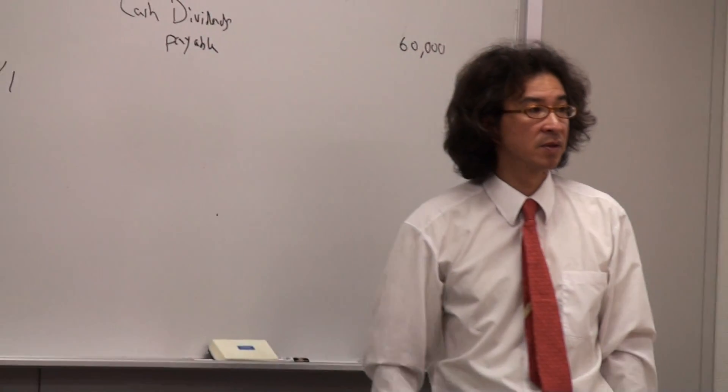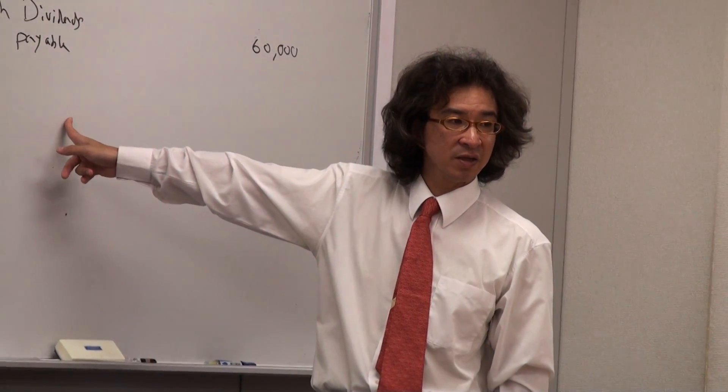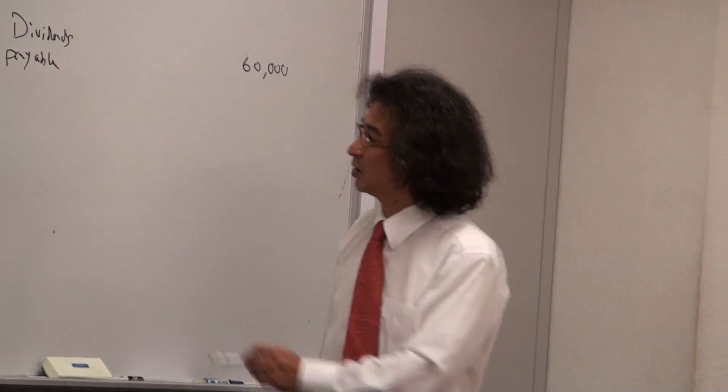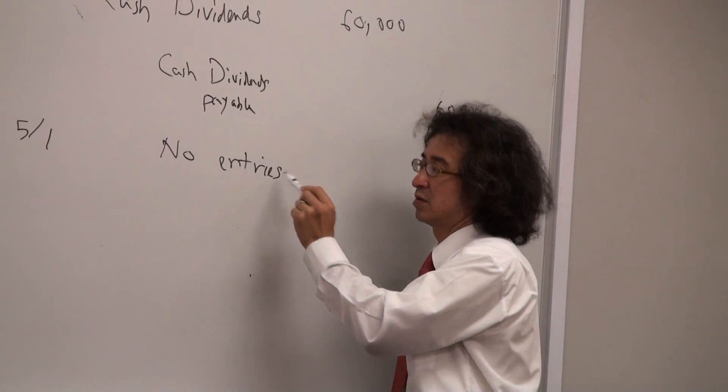So what will be the entry? Do you have to write anything in the general journal? No entries, because this is when the company's employees check the list of who's able to get cash dividends or not.